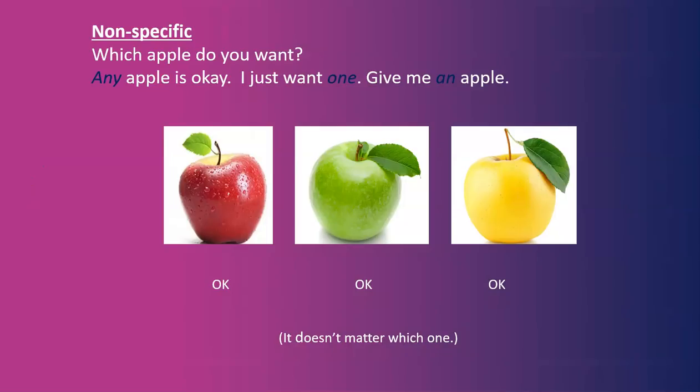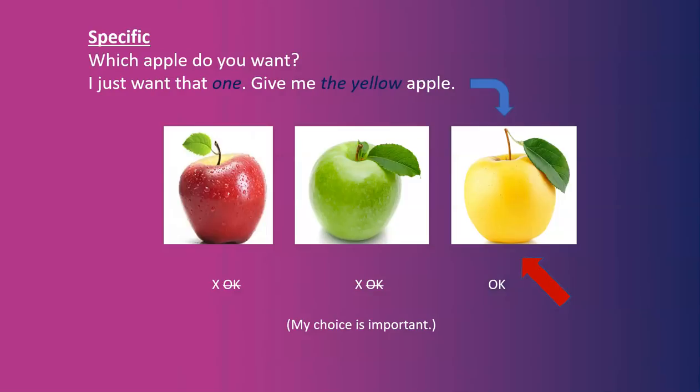If I say to you, 'Which apple do you want? Any apple is okay, I just want one — give me an apple.' A red apple is okay, a green apple is okay, a yellow apple is okay. It doesn't matter which one. That's non-specific. For specific: 'Give me the yellow apple. I don't want the red one. I don't want the green one. I just want the yellow one.' My choice is important, so we're talking about a specific apple.